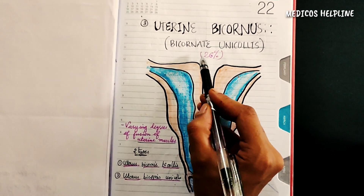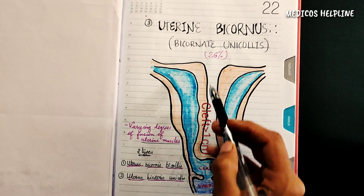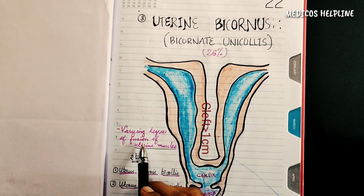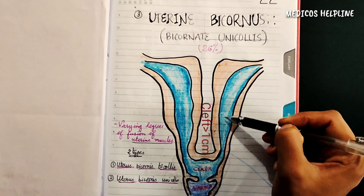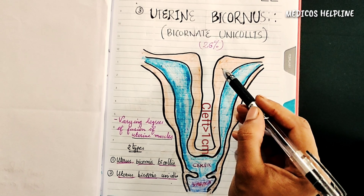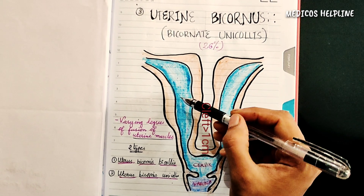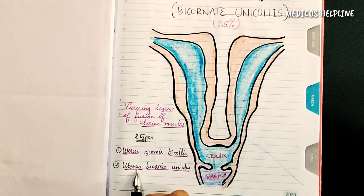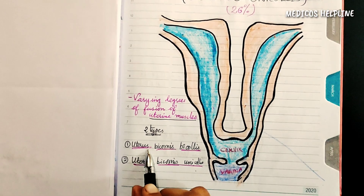Uterus bicornuate — here we get a heart-shaped uterus, as we can see in the figure. The Müllerian ducts fail to fuse at the fundus part, with varying degrees of fusion of the uterine muscles. They fuse at the cervix part, giving rise to two separate uterine bodies and a cleft in between which is greater than one centimeter in length.